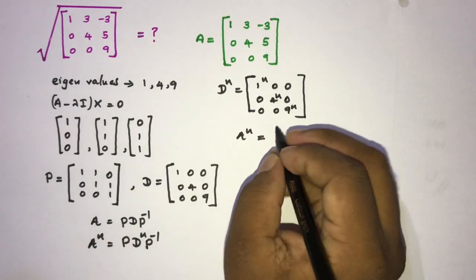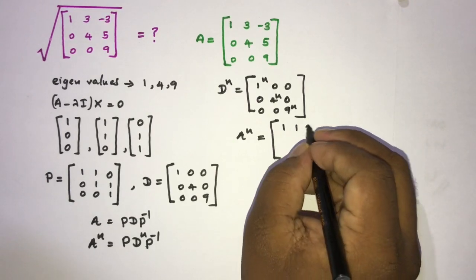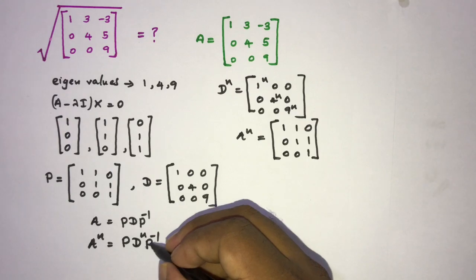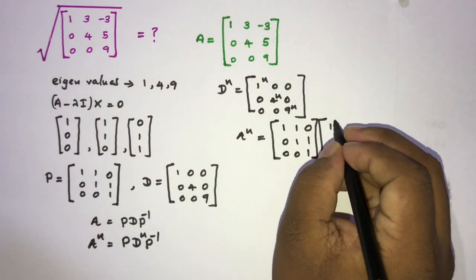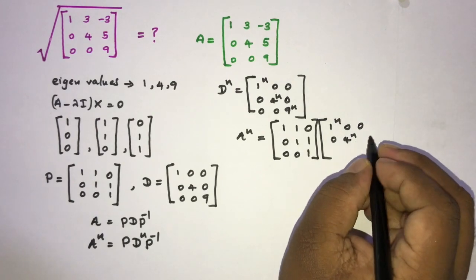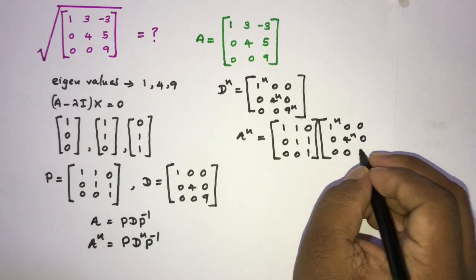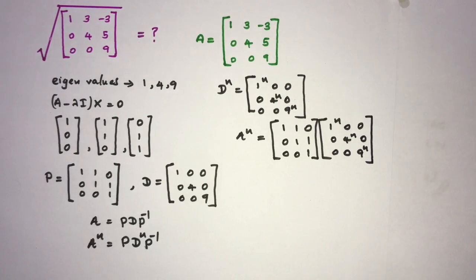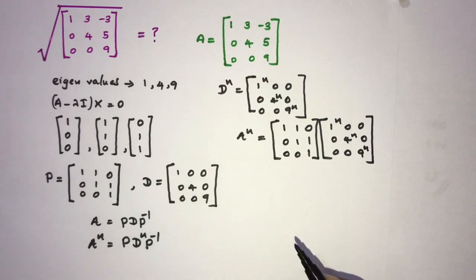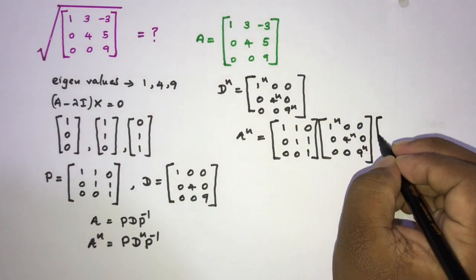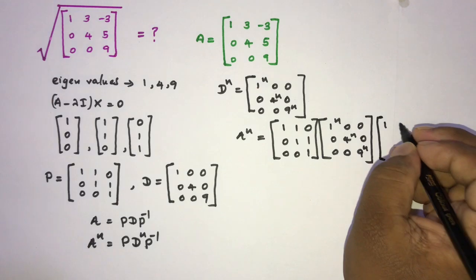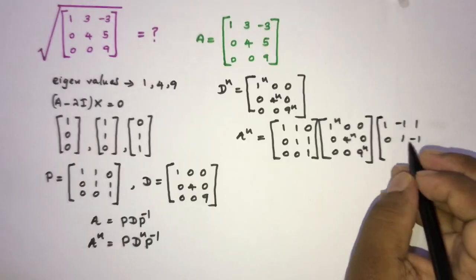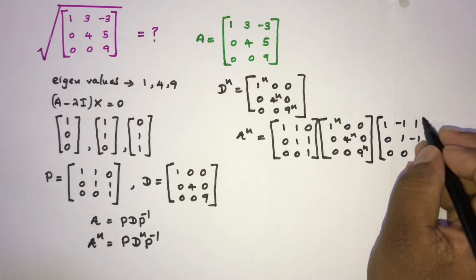A^n equals P times D^n times P⁻¹, where P = [1,1,0 | 0,1,1 | 0,0,1], D^n = diag(1^n, 4^n, 9^n). I will skip calculating the inverse, as you can find it easily. P⁻¹ is [1, −1, 1 | 0, 1, −1 | 0, 0, 1].